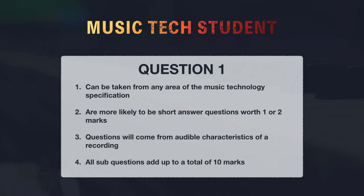What are the key things we're going to need to understand and research in order to complete this successfully? Question one can be taken from any of the areas of music technology — anything from Component 1, anything from Component 2, plus all three of the areas of study. It's more likely to be a short answer question, worth just one or two marks. It will most likely involve audible characteristics of a recording, which means you have to put on your headphones and listen in order to answer effectively. This question is worth 10 marks in total.